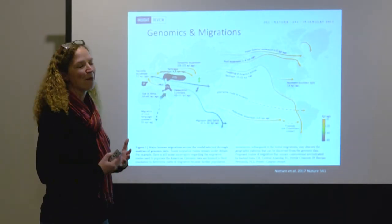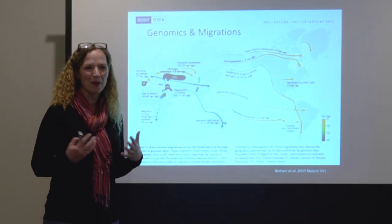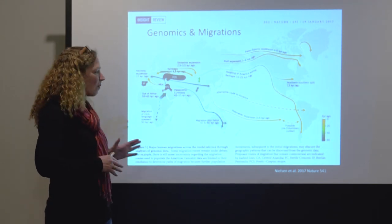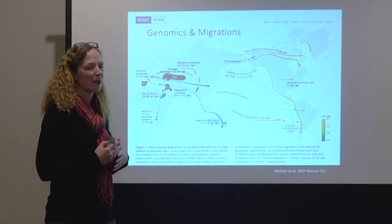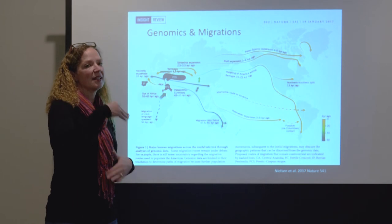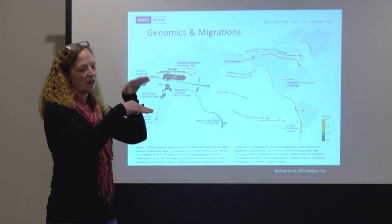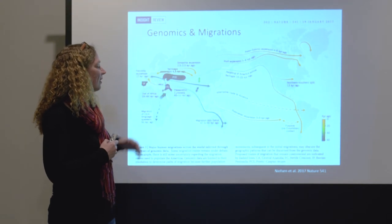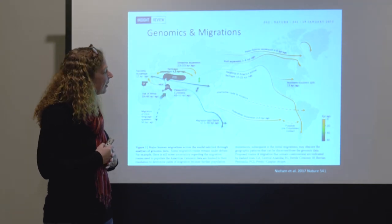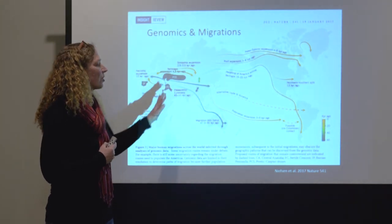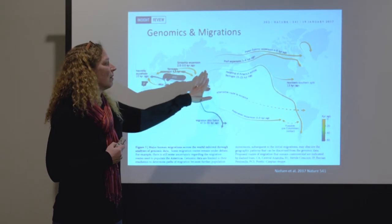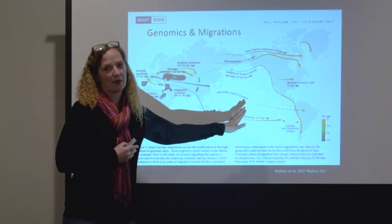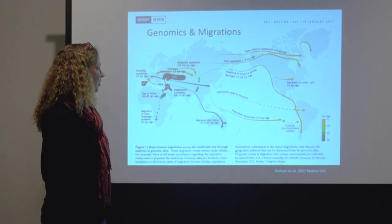We're getting quite a complex picture based on genomic DNA — looking at DNA of the whole genome — where we can actually start to reconstruct these migrations and see these layers of populations through time. We've done a lot of work now in Europe, and we're starting to get similar information for Asia, as well as figuring out what's happening in the Pacific region.